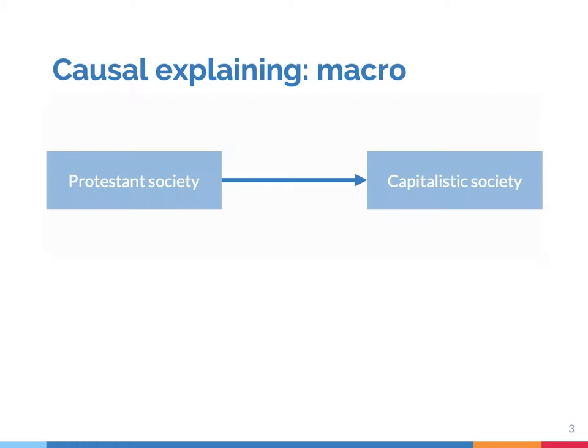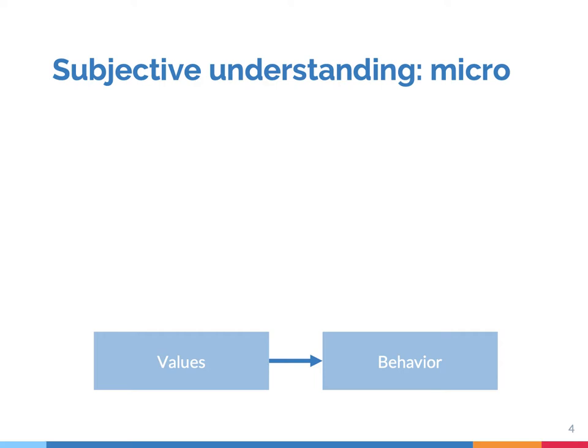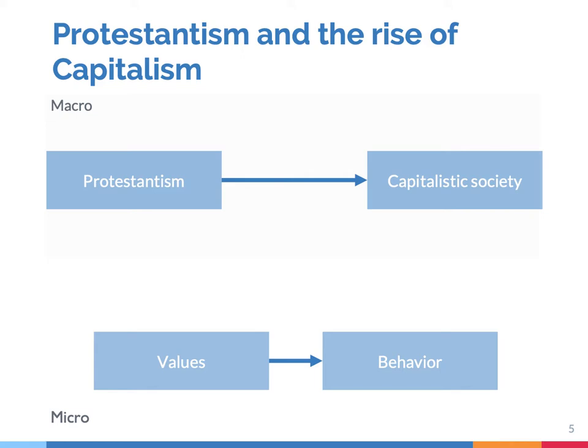As we have seen, causal explanations tend to focus on the collective ecological level. An example is the idea that in protestant societies capitalism emerges. When focusing on verstehen instead, you look at the individual level, such as how people's values shape their behavior. With a multilevel framework you can combine these two perspectives. Let's see how this works using Weber's famous study on the protestant ethic and the spirit of capitalism.